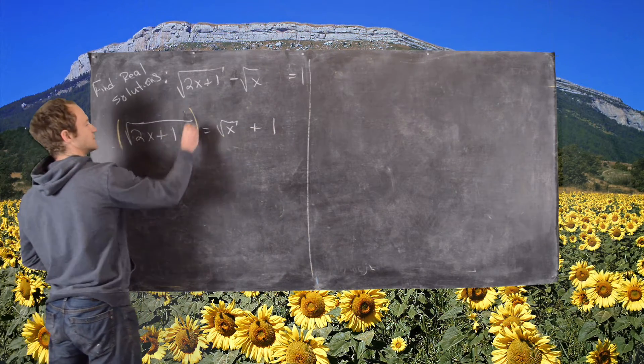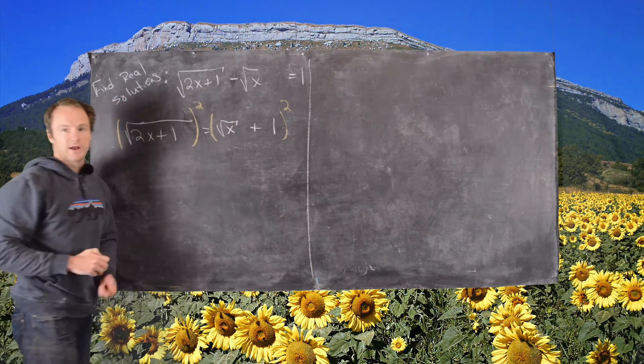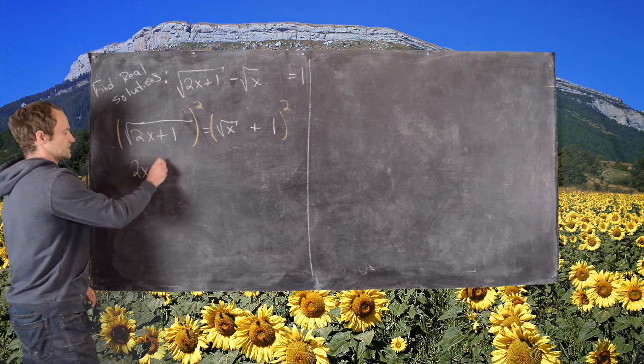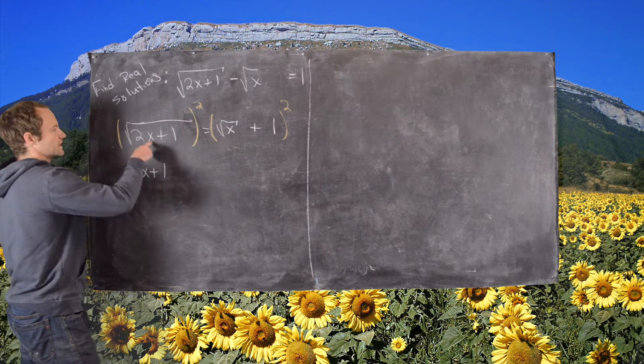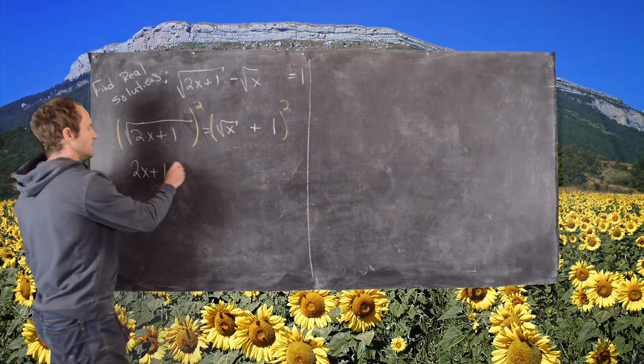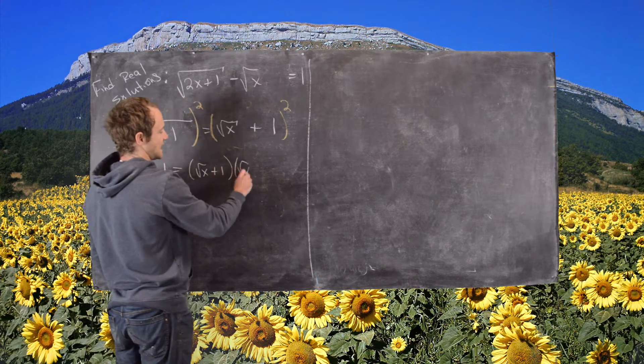I'll square both sides. Notice if I square the left-hand side, the 2x plus 1 comes out of the square root because the square and the square root cancel each other. Then I'm going to write the right-hand side out as a product of two binomials.